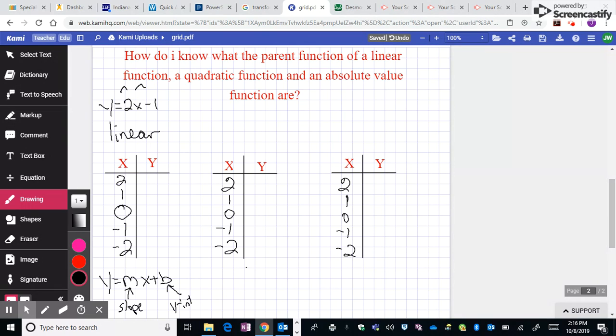If I plug in 0, it's going to be 2 times 0, which gives me 0, and then minus 1 is negative 1. If I plug in 1, 2 times 1 is 2, minus 1 is 1. 2 times 2 is 4, minus 1 is 3. 2 times negative 1 is negative 2, minus 1 is negative 3, and then this down here gives me negative 5.